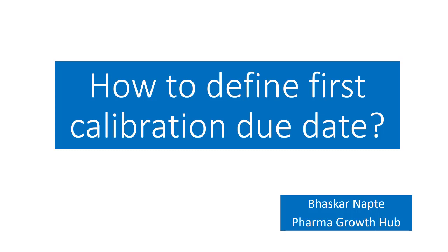As part of your quality system, you complete the qualification of the instrument or equipment, design the SOP for the same — both for operation and calibration. And once the SOP gets effective, you conduct the calibration of the instrument.